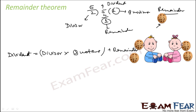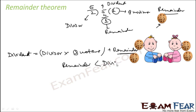Also note that the remainder is always less than the divisor. There were two kids — if we had three more cookies we could have divided further. So the remainder is always less than the divisor, not the quotient.